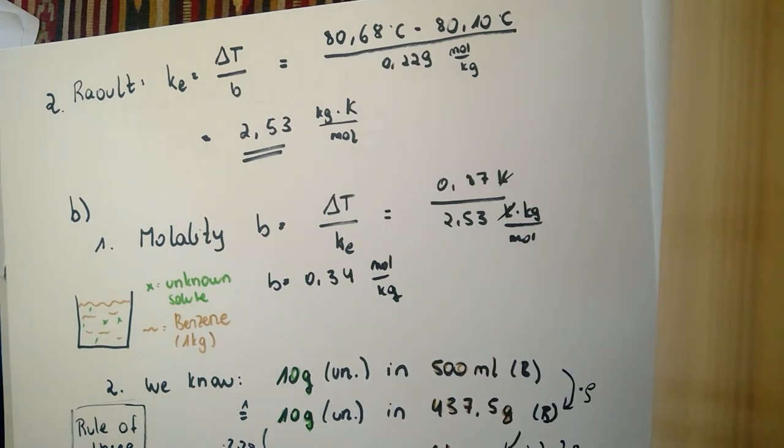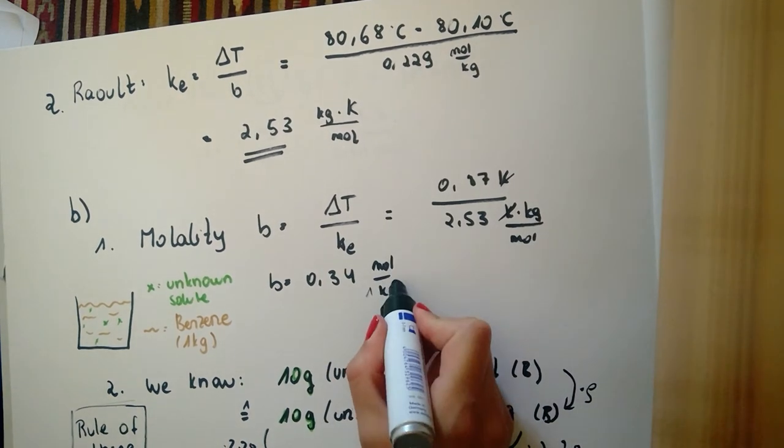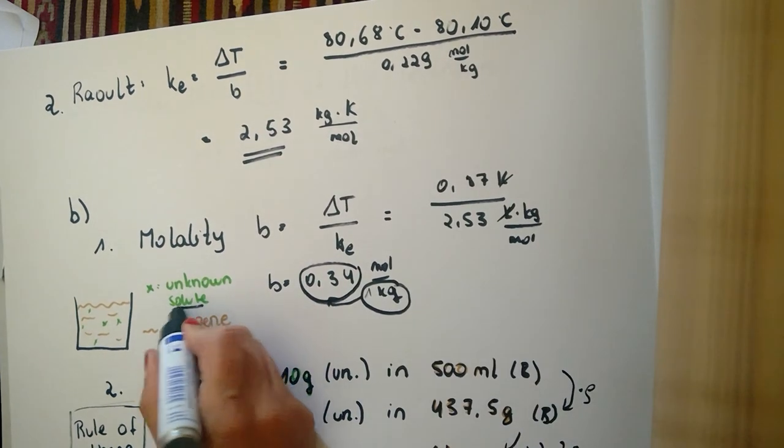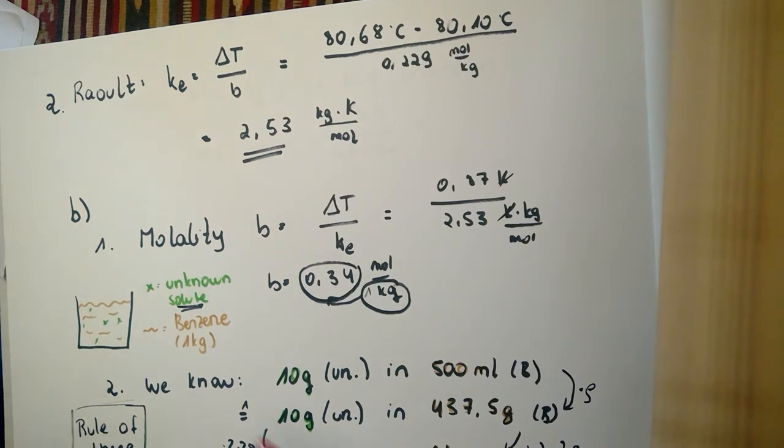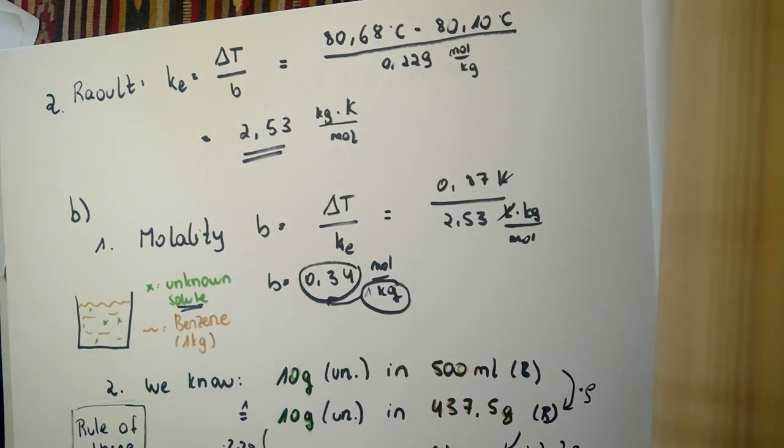The question is how many grams of the solute would be in one kilogram of benzene. We can see that in one kilogram of benzene there would be 0.34 mol of the solute. From the task we know that 10 g of the unknown are in 500 mL of benzene. If we multiply with the density of benzene, we know that 10 g of the unknown correspond with 437.5 g benzene.